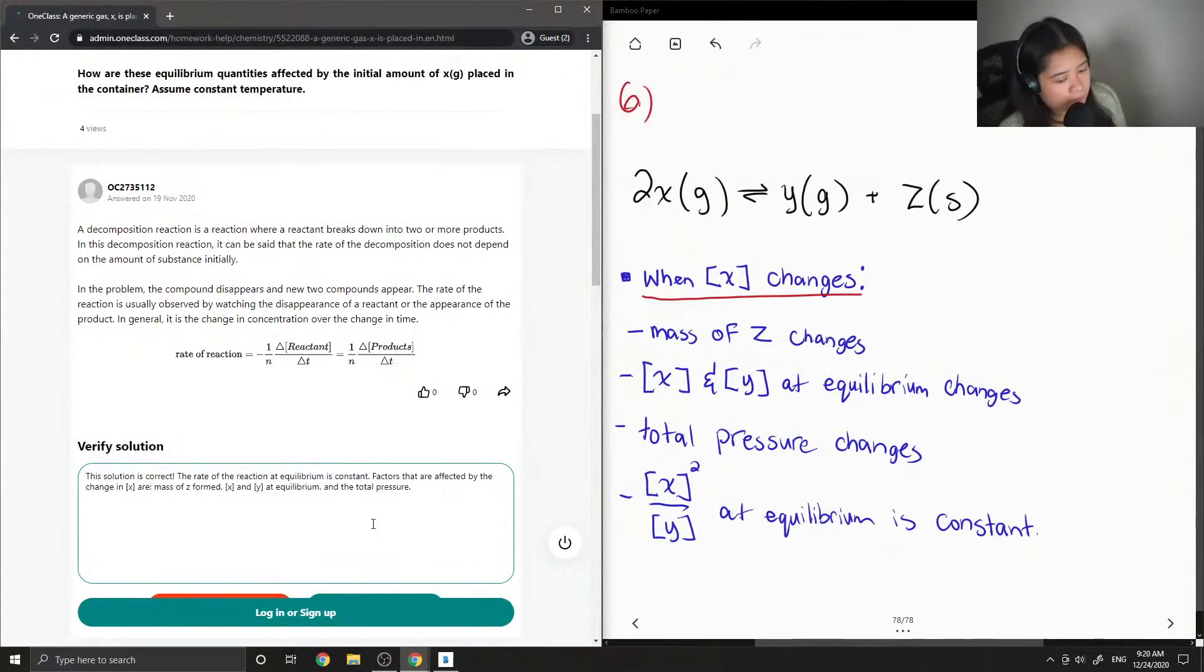Okay, so I said that this solution is correct. The rate of the reaction at equilibrium is constant. Factors that are affected by the change in the concentration of X are the mass of Z formed, the concentration of X and Y at equilibrium, and the total pressure.